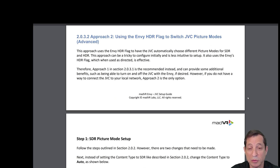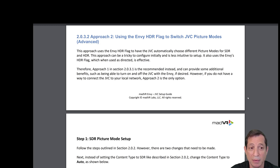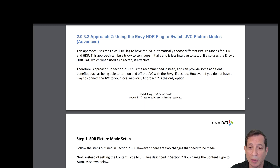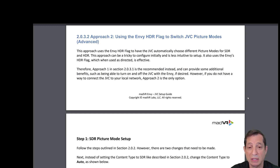Now let's talk about Approach 2, which uses the Envy's HDR flag to switch JVC picture modes. This approach can be tricky to configure initially and is less intuitive to set up. It also uses the Envy's HDR flag, which when used as directed is effective. Therefore, Approach 1 is the recommended way to go. But if you can't have the JVC on the same network as the Envy, then this is the way to go with Approach 2.